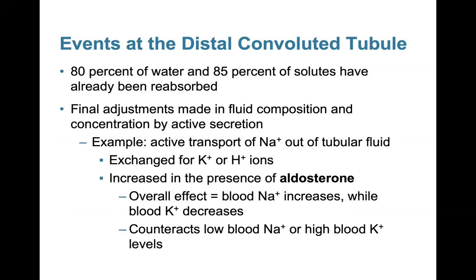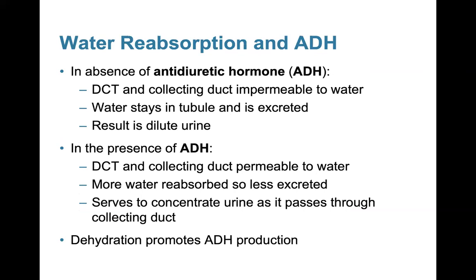In the DCT, 80 percent of water and 85 percent of solids have already been reabsorbed. Final adjustments are made in fluid composition and concentration by active secretion, most likely under hormonal influence. ADH (anti-diuretic hormone) plays a very important role: in the absence of ADH, the DCT and collecting duct are impermeable to water, so water is removed from the body, resulting in dilute urine. However, if ADH is secreted, the DCT and collecting duct become permeable to water, more water is reabsorbed, less is excreted, and this produces concentrated urine. Dehydration promotes ADH production.